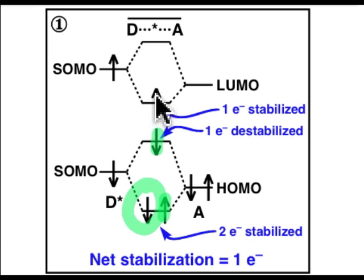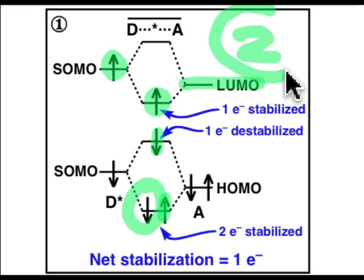We also have an additional electron that's stabilizing, that's coming from this partially filled level, that interacts with the empty level, the lowest unoccupied molecular orbital of molecule A. And so altogether, the excited state complex has two stabilizing electrons.